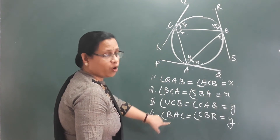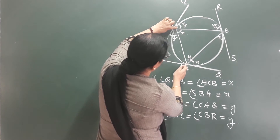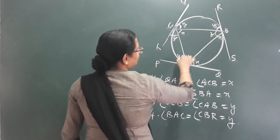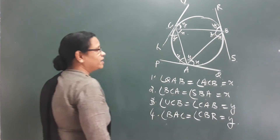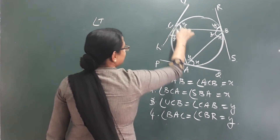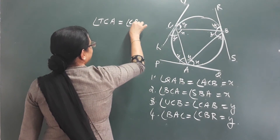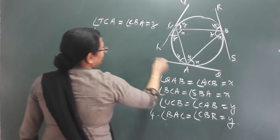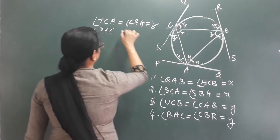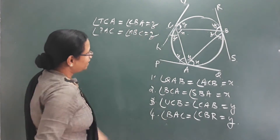Now we have four pairs. This angle is z. Angle TCA equals CBA, which is z. And angle PAC equals ABC. P, A, C equals A, B, C — that equals z. Then we call it six pairs of angles in total.